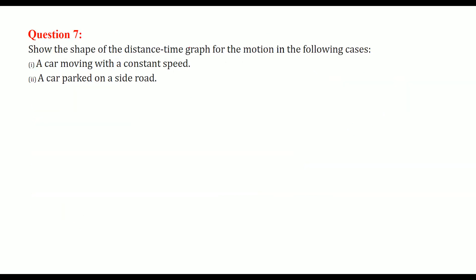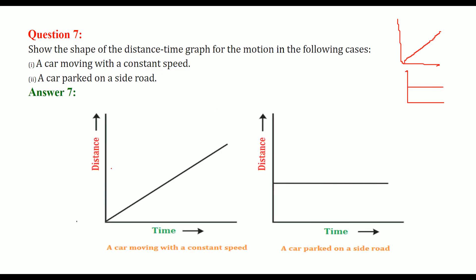Show the shape of the distance-time graph for the following cases. For a car moving with constant speed, the graph is a straight diagonal line — distance increases steadily with time. For a car parked on the roadside, the car is not moving, so the distance remains constant with time, giving a horizontal straight line.